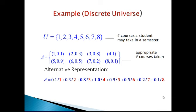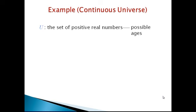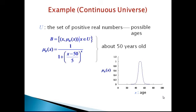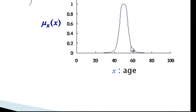The slash is not an ordinary division — it is the separator between the membership function value and the element. A fuzzy set can also be represented in a continuous universe. Suppose the universal set U is the set of positive real numbers representing all possible ages. The membership function is defined as mu_B of X equals 1 divided by (1 plus ((X minus 50) divided by 5) to the power 4), representing 'about 50 years old'. This is a continuous membership function known as a triangular membership function, with a gradual transition between membership values.